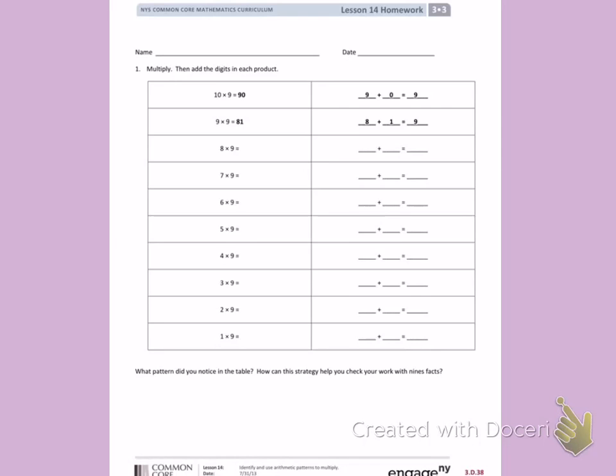So we can see they have multiplied 10 times 9, which is 90. They have added 9 plus 0 to equal 9. 9 times 9 is 81. They have added the digits 8 plus 1 to equal 9.